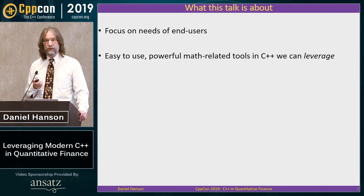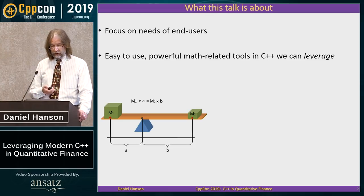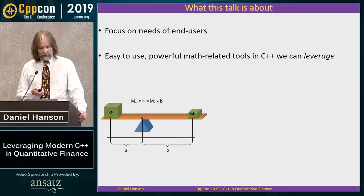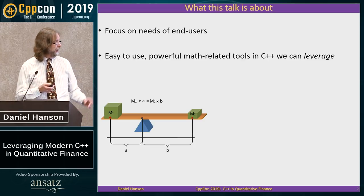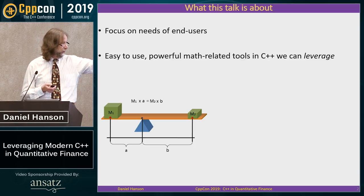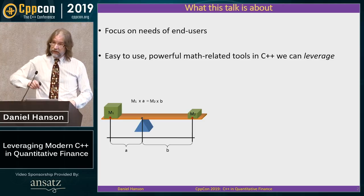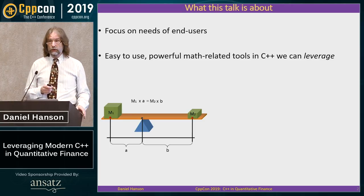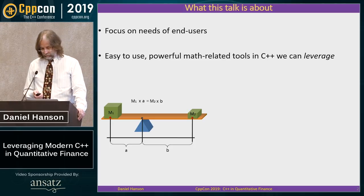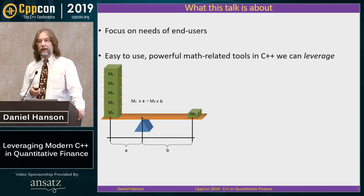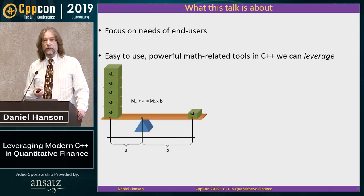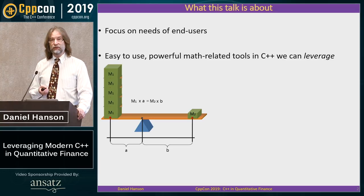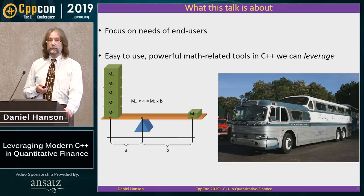We're talking about tools in C++ that we can leverage. The abstractions and new features in C++ are like torque on a lever — it takes less effort to lift a heavier load. The idea is we want to let C++ do the driving as much as we can — kind of like Greyhound, but a lot faster.